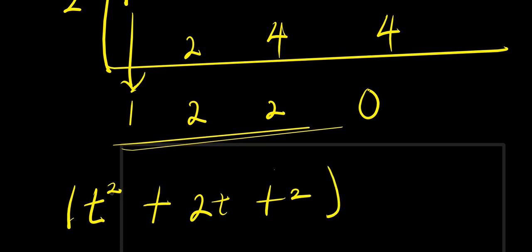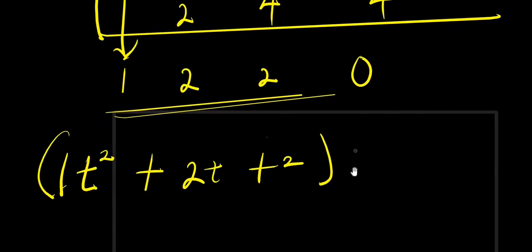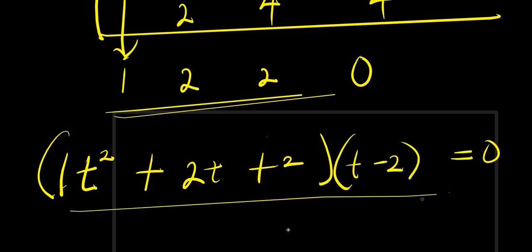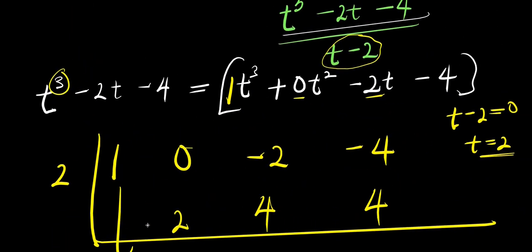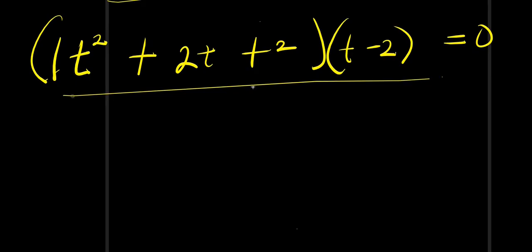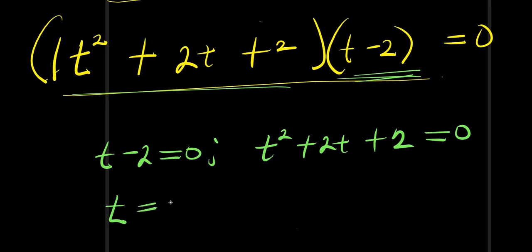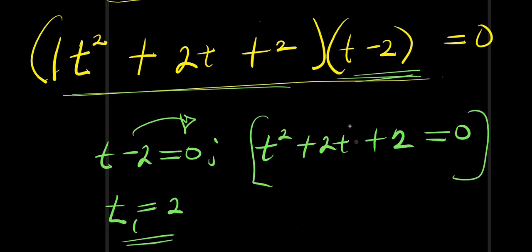Since the original highest exponent was t³, reducing by one gives the quotient t² + 2t + 2. So our equation factors as (t − 2)(t² + 2t + 2) = 0. We already have t − 2 = 0 giving t = 2. Now to solve t² + 2t + 2 = 0, we use the quadratic formula.